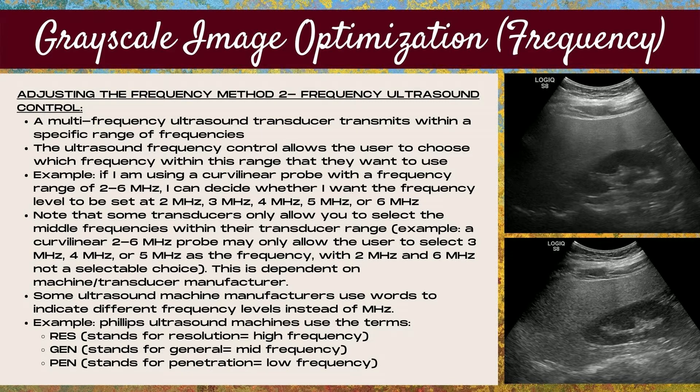The second method of adjusting frequency is by using the frequency ultrasound control. A multi-frequency transducer transmits within a specific range of frequencies, and the frequency control allows the user to choose which frequency within this range to use. For example, if you're using a curvilinear probe with a frequency range of 2 to 6 megahertz, you can decide whether you want the frequency set at 2, 3, 4, 5, or 6 megahertz.